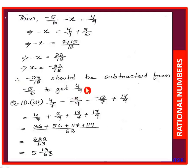Question 10 (iii): evaluate 4/7 - (-8/9) - (-13/7) + 17/9. Simplify the signs: minus into minus gives plus, so this becomes 4/7 + 8/9 + 13/7 + 17/9. LCM of 7 and 9 is 63.